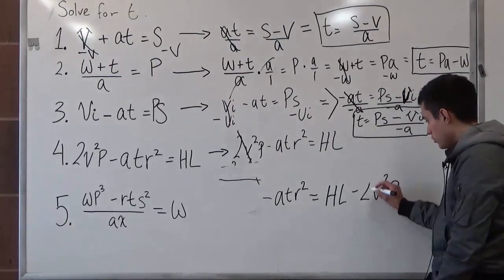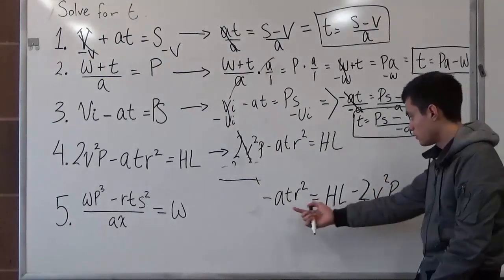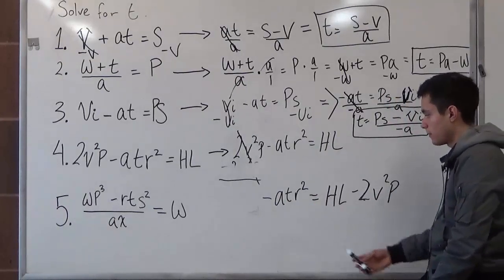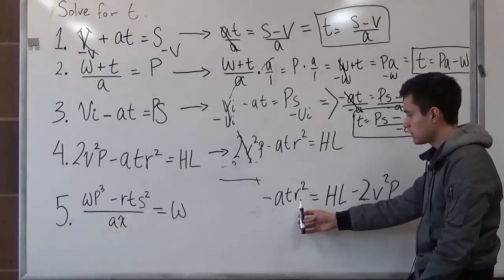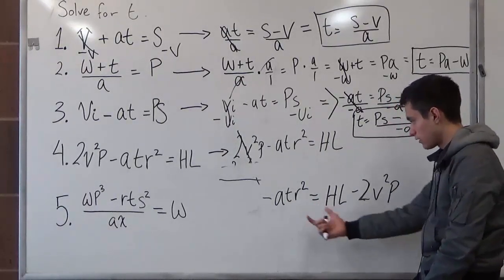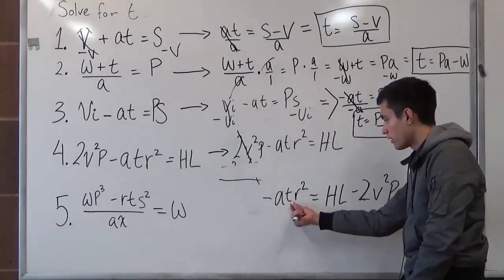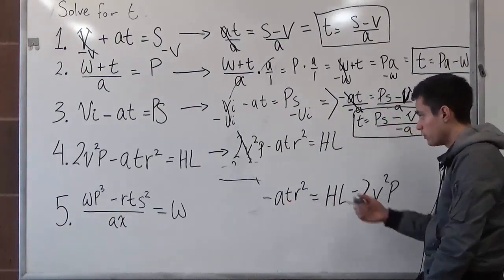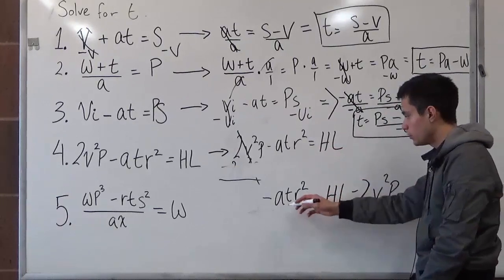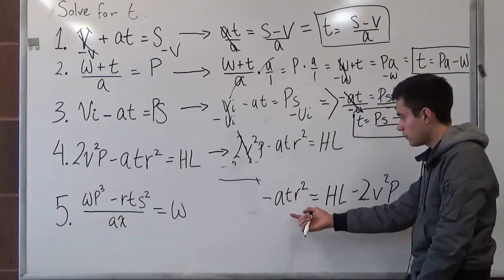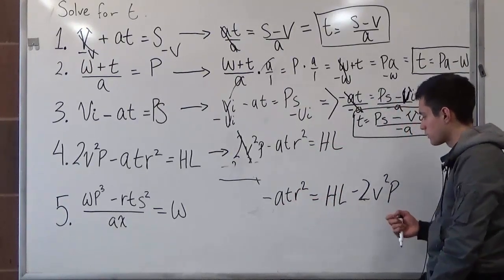And now what we want to do is, again, get t by itself. And we can see that negative a times t times r squared, that's the whole. But we want to get it by itself. So now, what we did before, we just have to divide negative a and r squared to this as a whole.